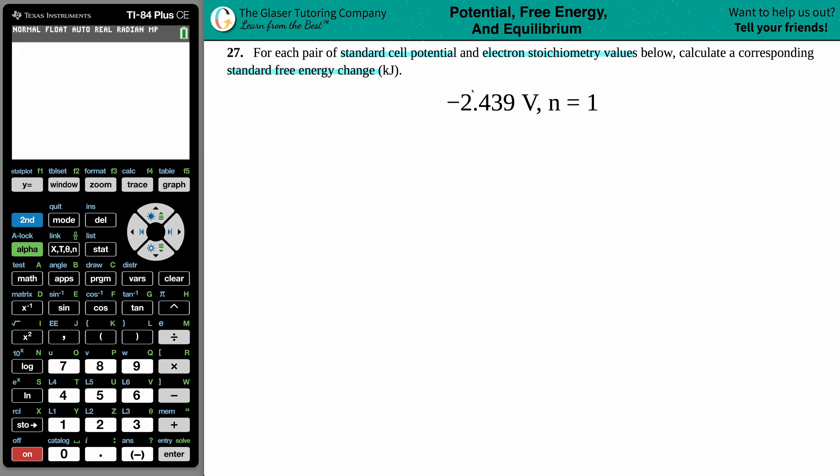Alright, so they give us negative 2.439 volts and n equals 1. Now, what do those mean? Well, one's got to be the standard cell potential. One's got to be something to do with electron stoichiometry. Let's start with the cell potential.